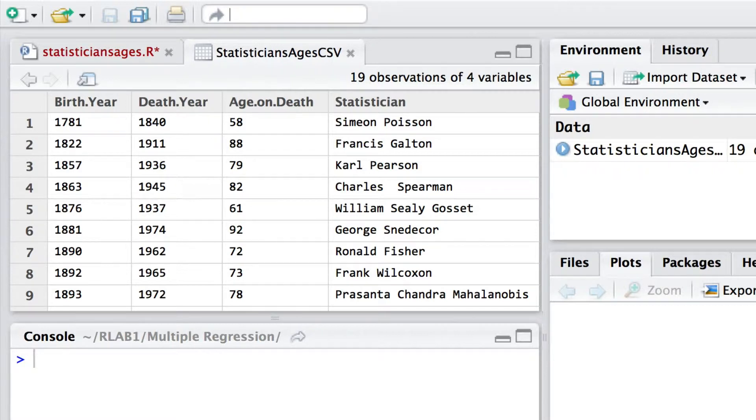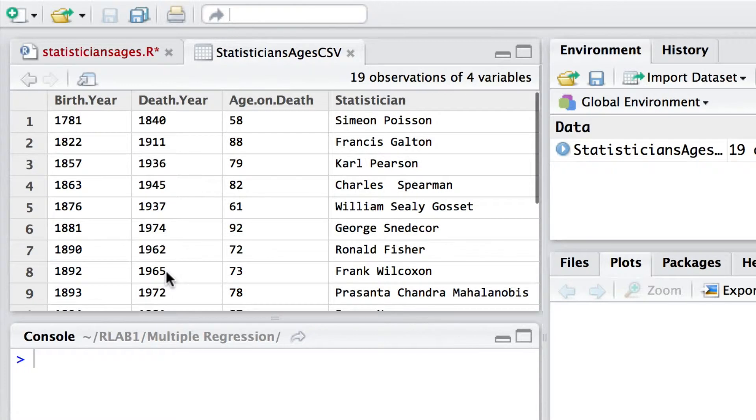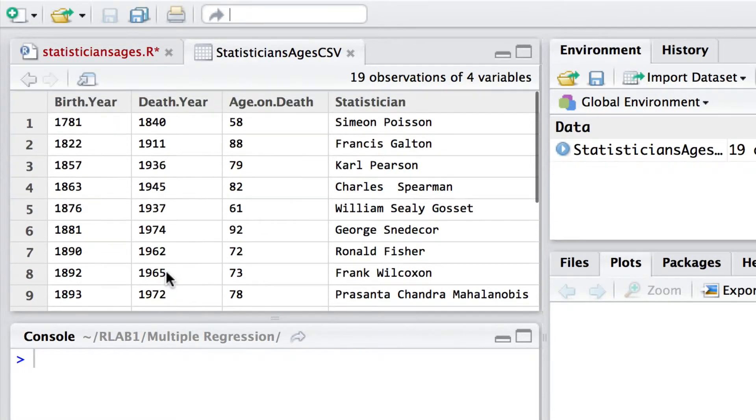The predictive variables that we're going to be using are their birth year and their death year. Now of course this isn't really a type of problem that would typically involve multiple regression because we can get a very good approximation of the age of death of any of these individuals by simply taking the birth year away from the death year.